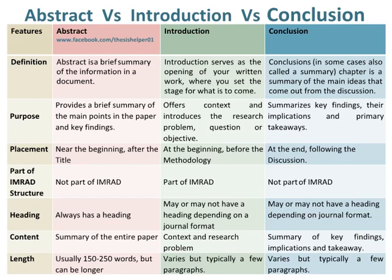Content of Abstract is based on a summary of the entire paper, whereas Content of Introduction is based on context and the research problem. Whereas Content of Conclusion is based on a summary of key findings, implications, and takeaways.